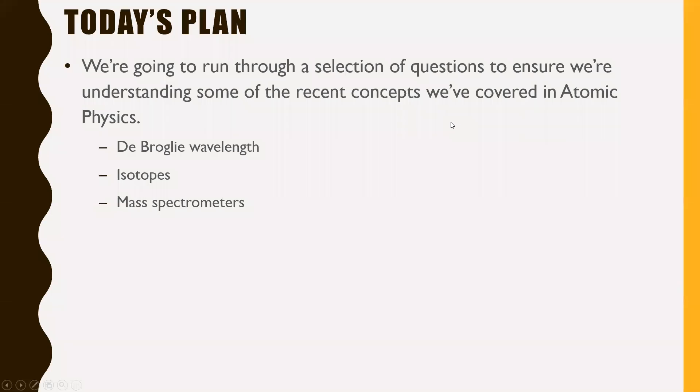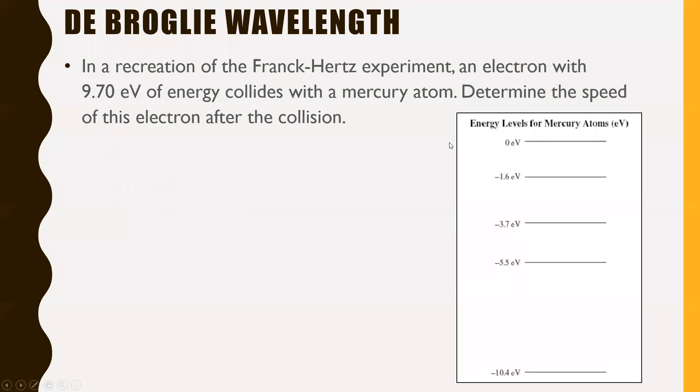So we're going to run through a selection of questions. It's only going to be three questions today. There's going to be one on de Broglie wavelength, one on isotopes and then one on mass spectrometers. That's all we've really done, but it's pretty complex stuff here. So in other words, I think we really need some practice here. Anyway, first question, this is similar to one that was in your book.